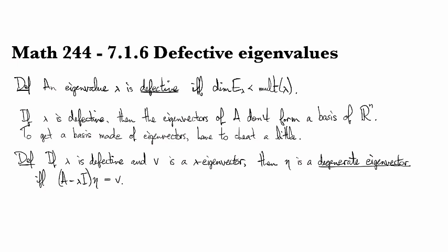And sadly, the answer is no. So it's possible to have defective eigenvalues. We say that an eigenvalue lambda is defective if the dimension of its eigenspace is smaller than the multiplicity that it has as a root of the characteristic polynomial.